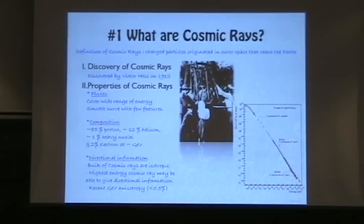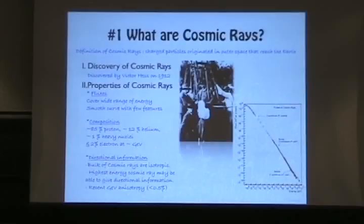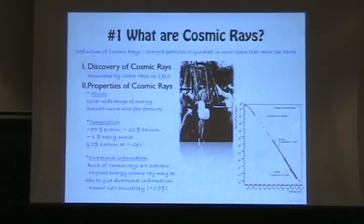That's interesting from the start because it's very smooth, though of course there are some characteristic features where the flux changes — we will talk about that later in the lecture. Also, there are different kinds of particles inside the cosmic rays. Most of them are protons and the composition changes with energy. Around 1 GeV, about 85% is proton and 12% is helium.